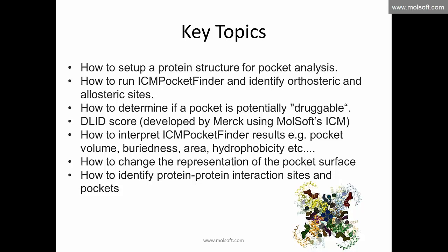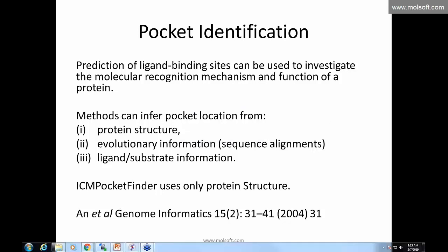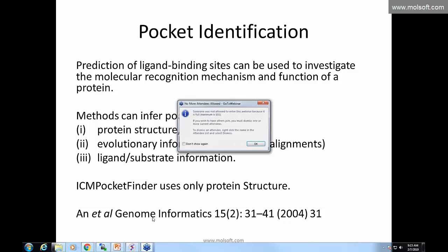The prediction of ligand binding sites can be used to investigate the molecular recognition mechanism and function of a protein. There are obviously other methods out there — some use protein structure, others use evolutionary information like sequence alignments, and others use ligands or substrate information to identify the pocket. ICM Pocket Finder uses only protein structure, and the initial paper describing this method was published back in 2004.